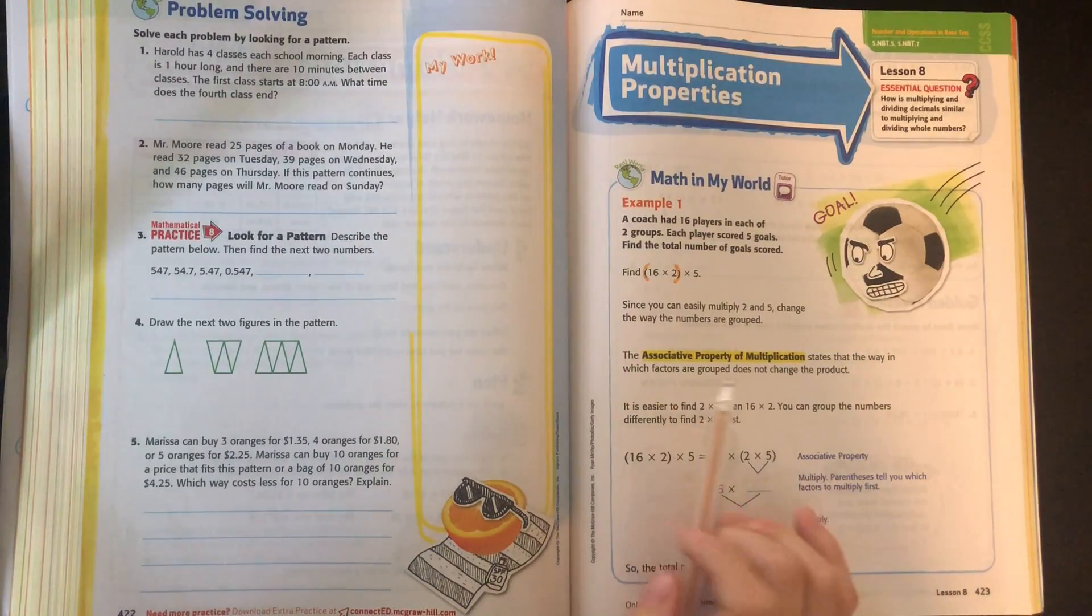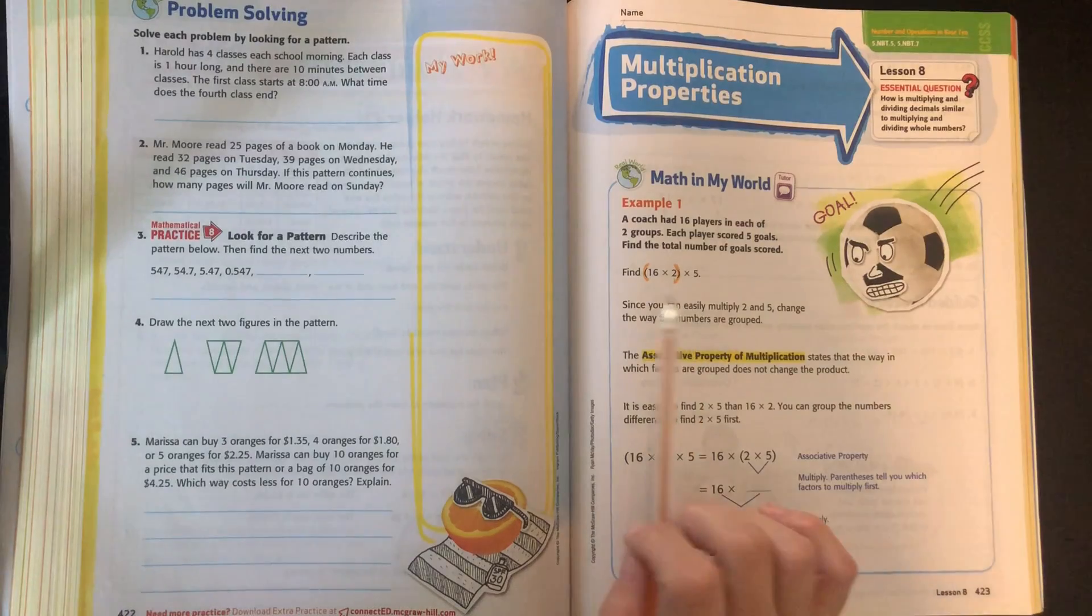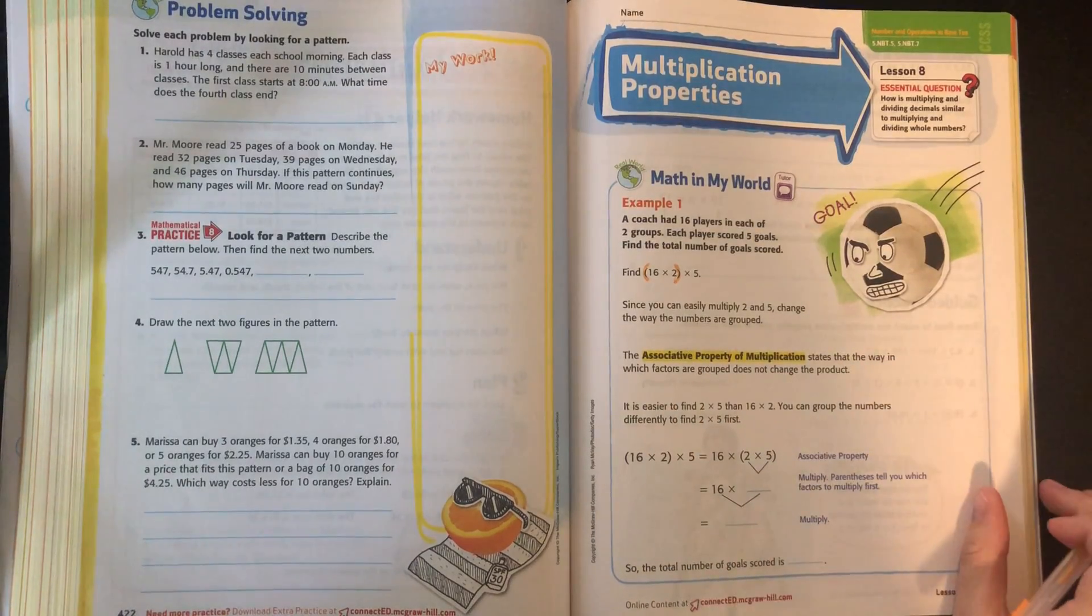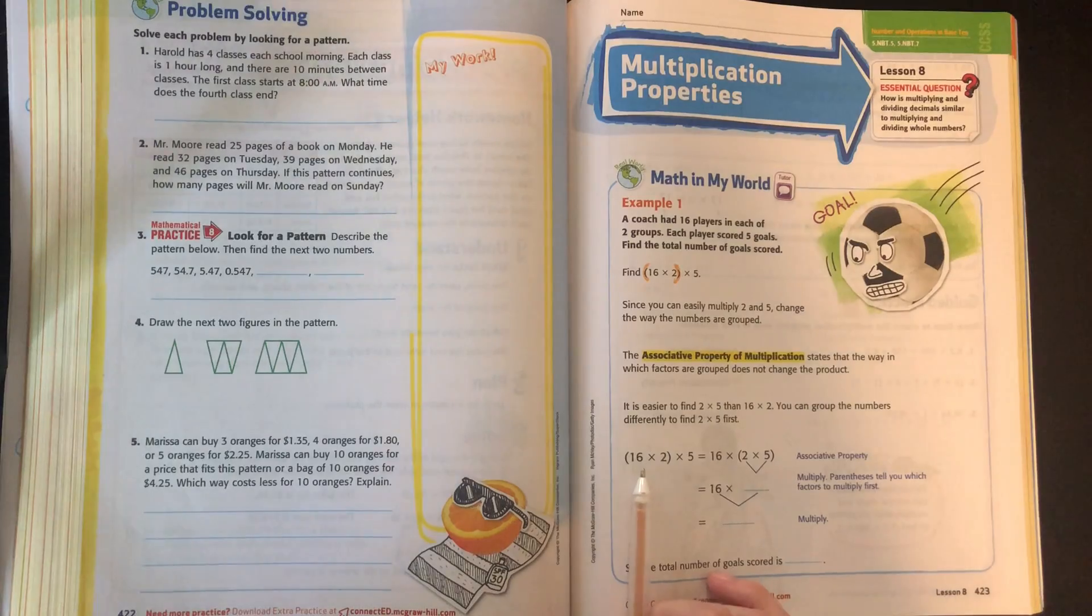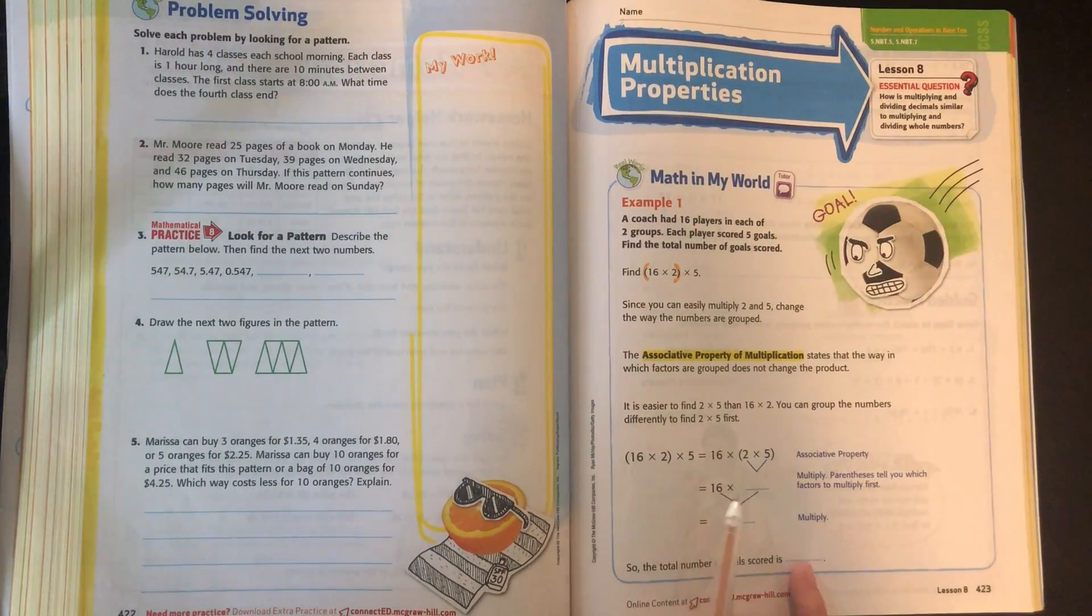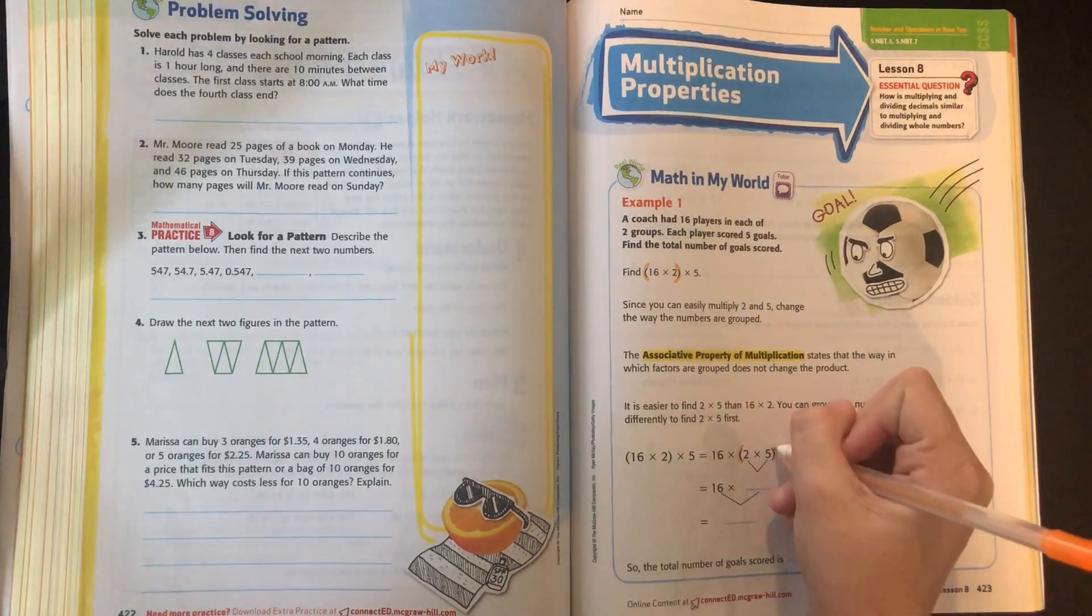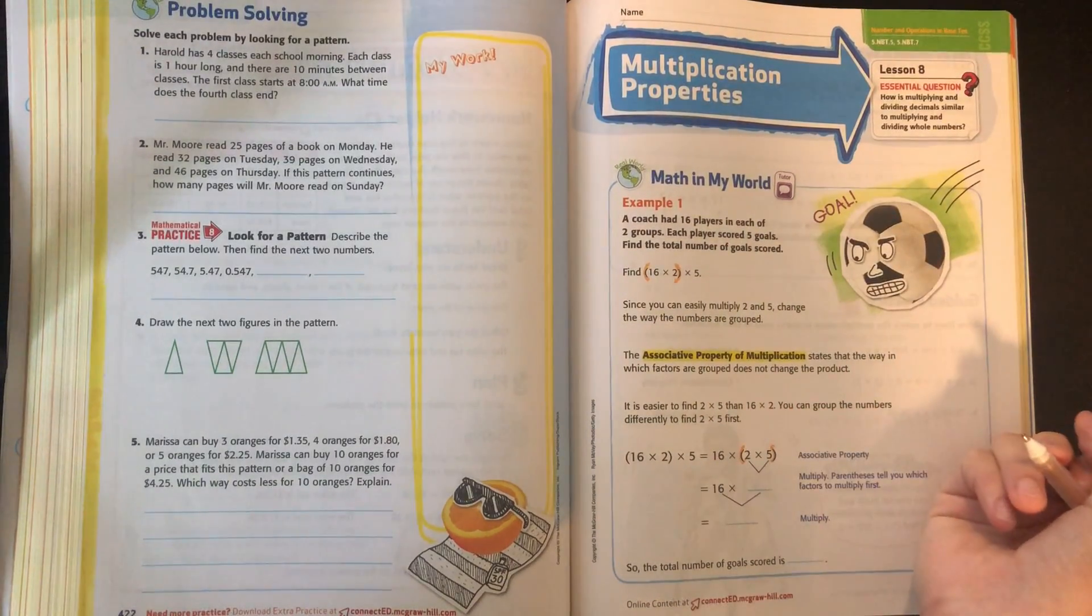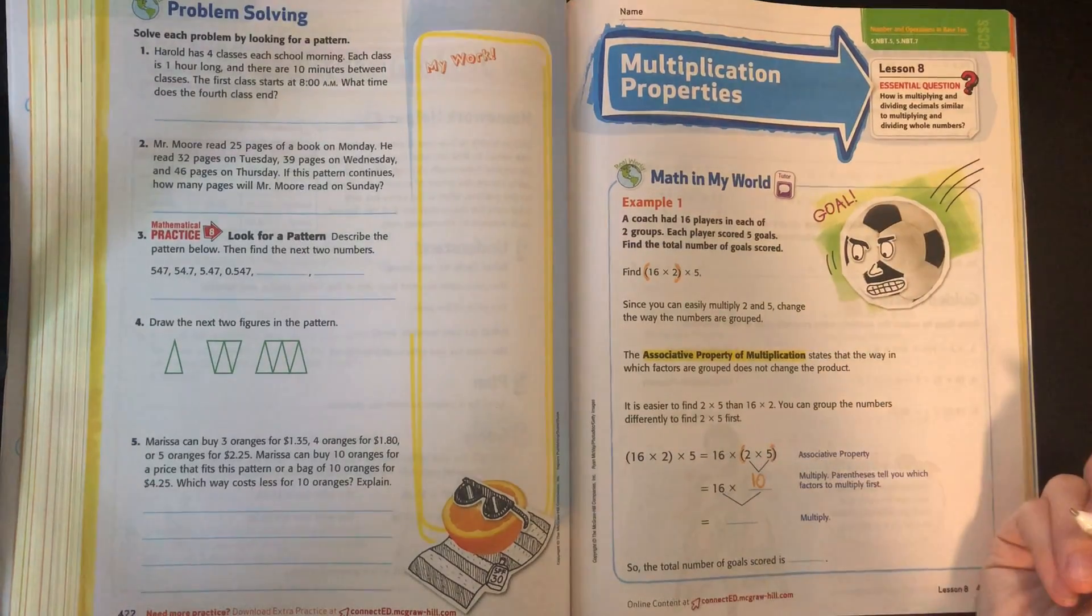So all that means is that the way that the factors or the numbers are grouped doesn't change the product. So we're going to change this from the quantity 16 times 2 times 5 to 16 times the quantity 2 times 5. Because 2 times 5 we know easily is 10.